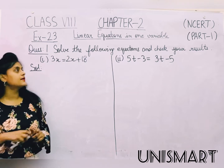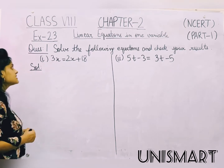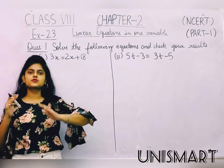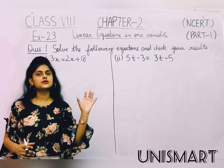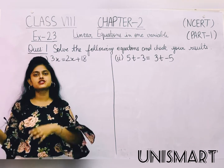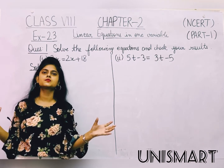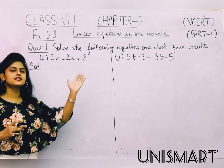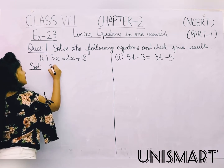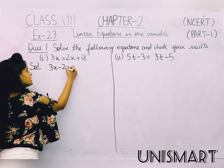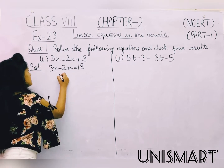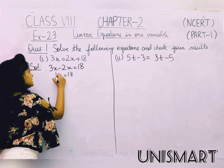We will start with equation number one: 3x is equal to 2x plus 18. Using the transposing method, we shift the variable term. 2x shifts to the left-hand side and becomes negative, so 3x minus 2x is equal to 18. Therefore x is equal to 18.